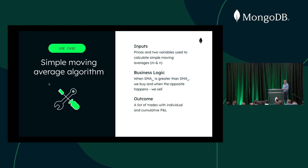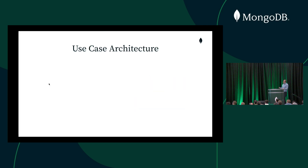In a real-life scenario, the outcome would be sending trade orders to an order management system or directly to an exchange. In our case, we're just going to print out the trades on screen and calculate the individual and cumulative PNL, just so we know how we're doing. Now let's look at how we're going to achieve this.